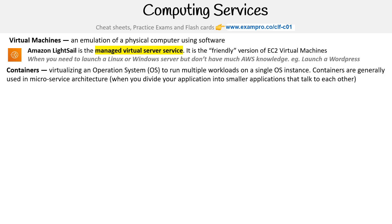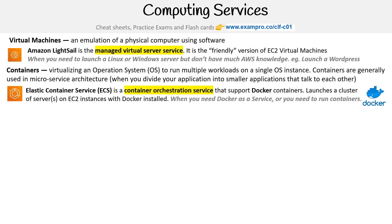We have containers — virtualizing an operating system to run multiple workloads on a single OS instance. Containers are generally used in microservice architecture, when you divide your application into smaller applications that talk to each other. Here we would have ECS, Elastic Container Service.